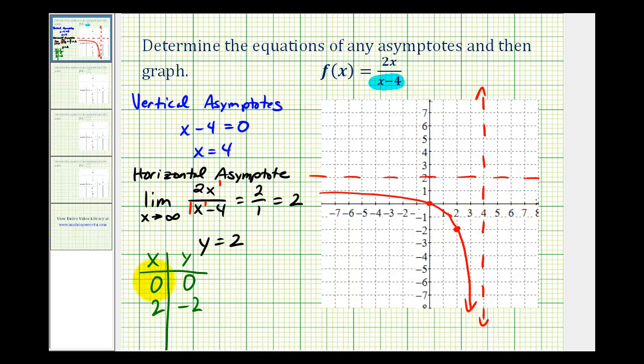Let's try letting x equal six. If we let x equal six, we would have 12 in our numerator and two in our denominator. And 12 divided by two is equal to six. So the point six, six is on our function, which would be right here.